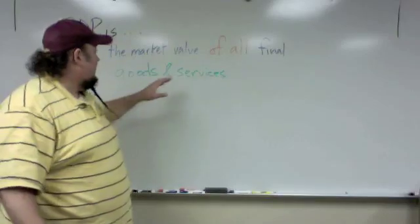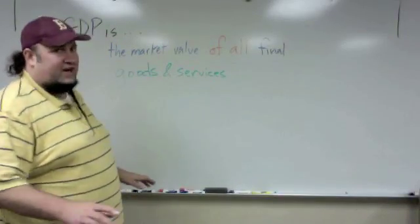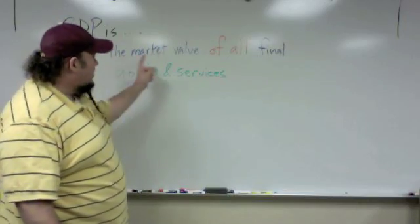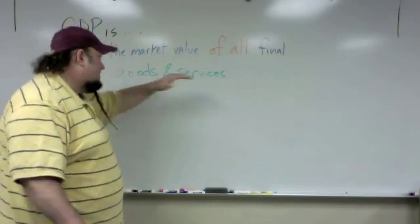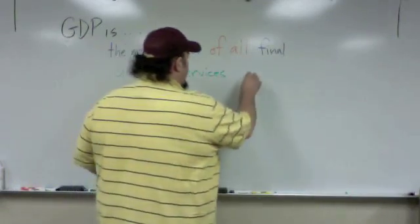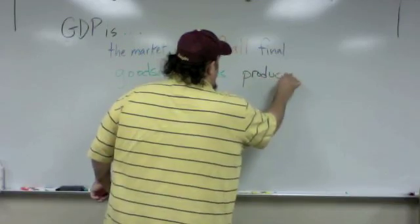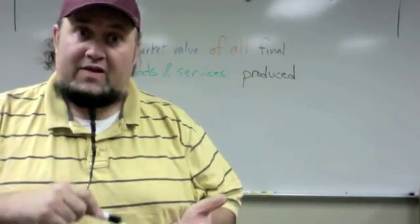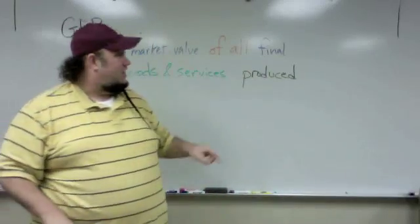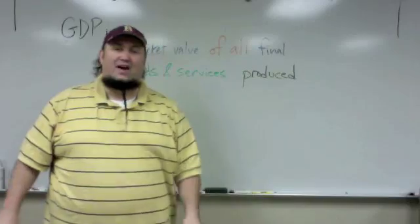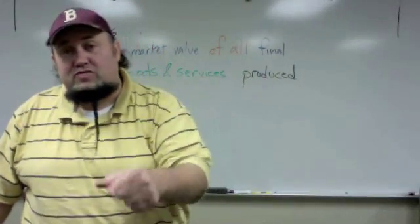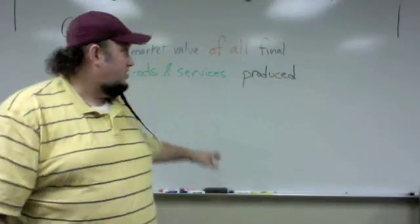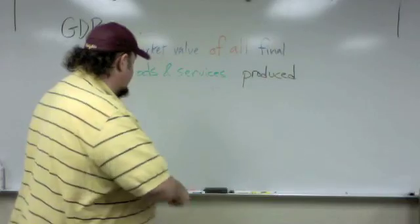The market value of all final goods and services — put them in different colors so you remember those different parts of the definition. Next key word: produced. Not consumed, not purchased, but produced. That means there's a little trick: sometimes things are produced in one year but not consumed or purchased until another year. There are a few accounting tricks we'll need to make sure we capture everything.